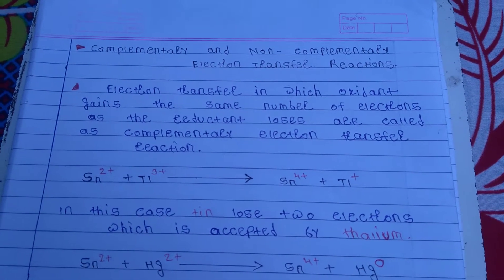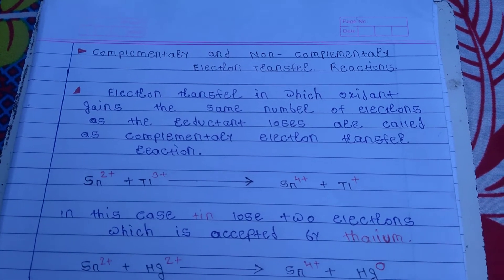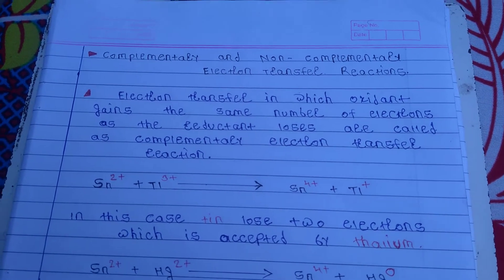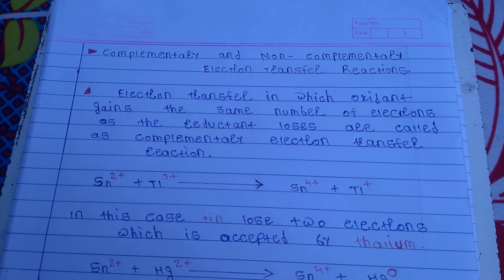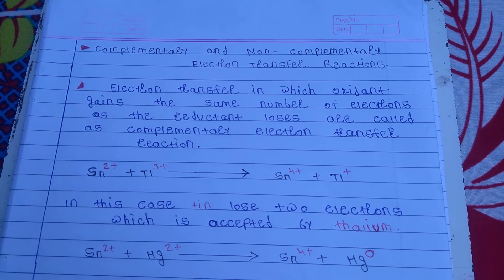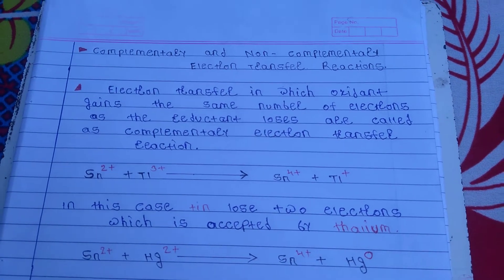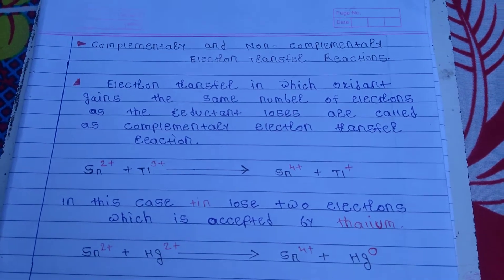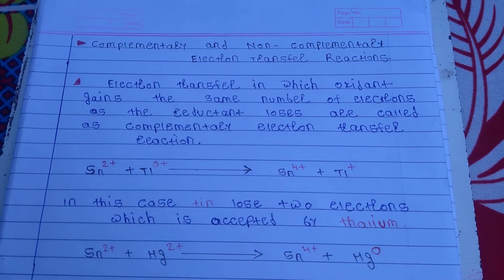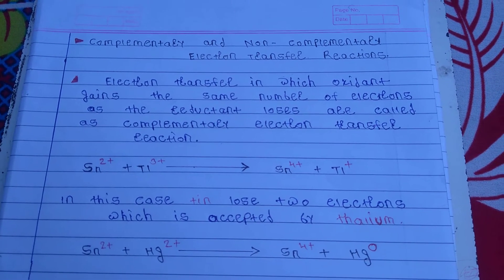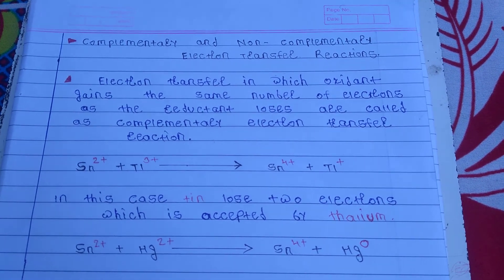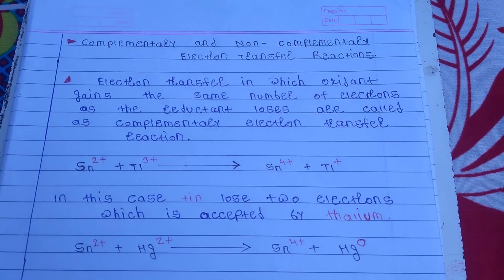Hi friends, welcome to the complementary and non-complementary electron transfer reaction. First we see the complementary electron transfer reaction. Complementary electron transfer means the electron transfer in which the oxidant gains the same number of electrons as the reductant loses.